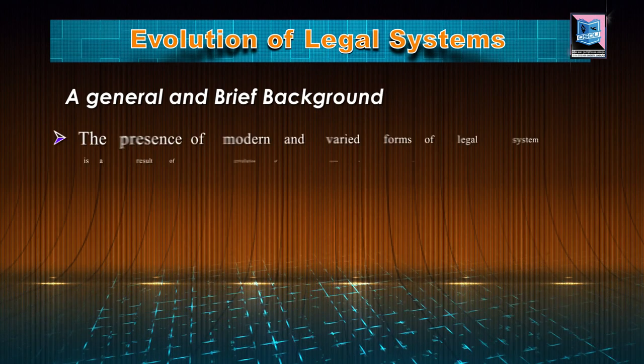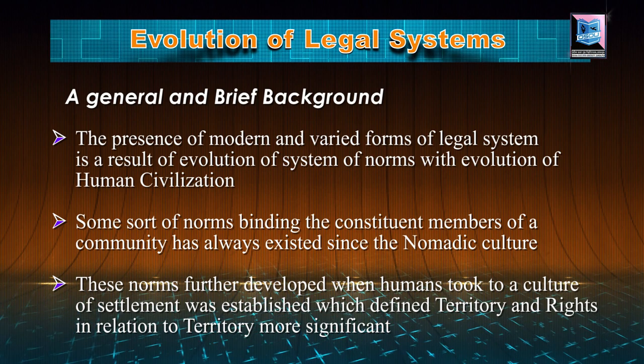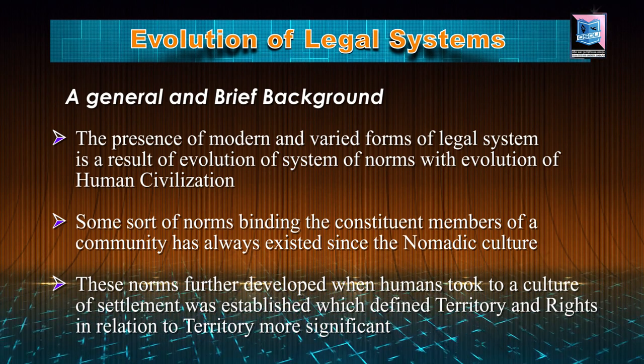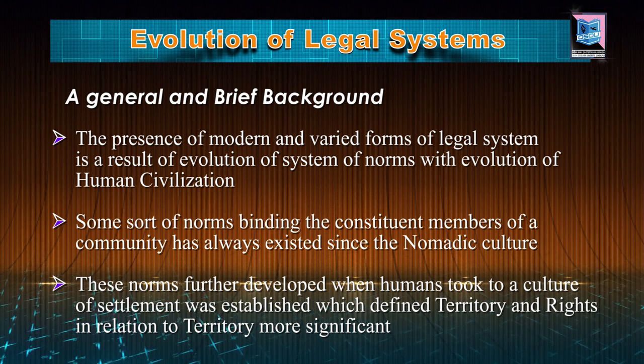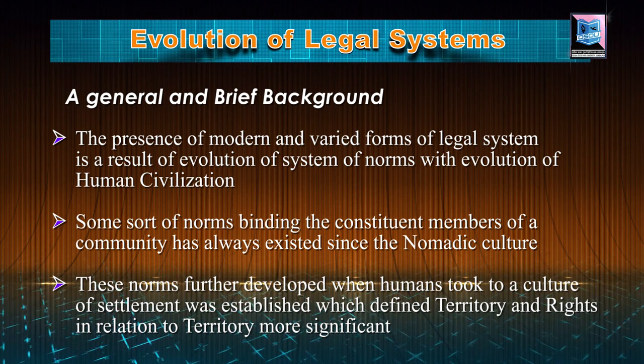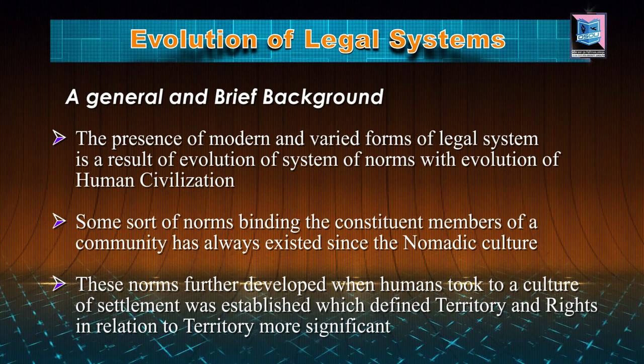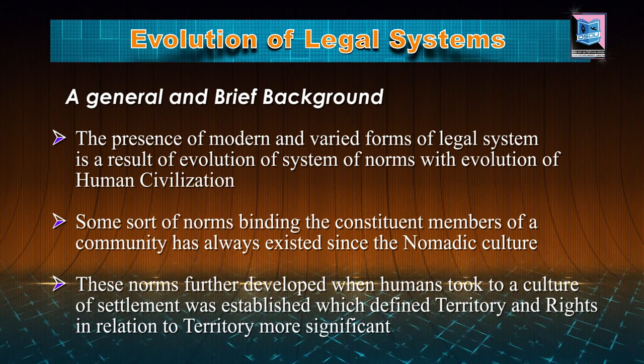Let's start with the evolution of legal system. Some sort of norms binding the constituent members of a community has always existed since the nomadic culture. These norms governed the relationship among members interse, their right over property in the form of cattle, area of land and the like, duties towards each other and their properties and towards the community as a whole.